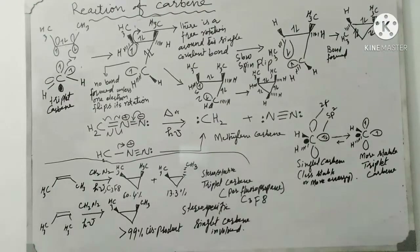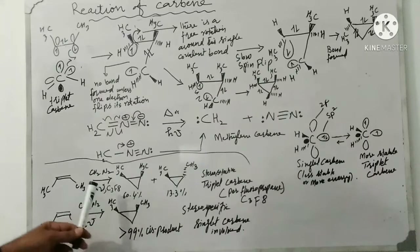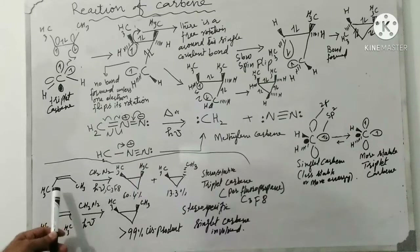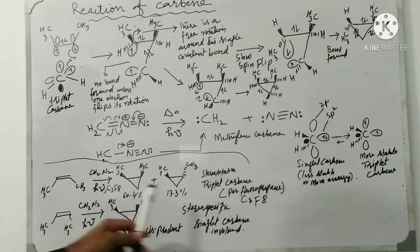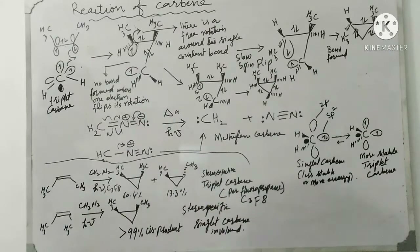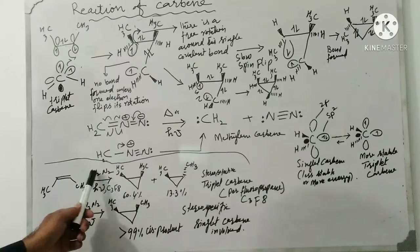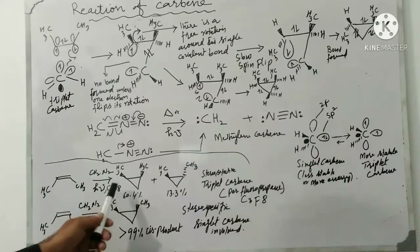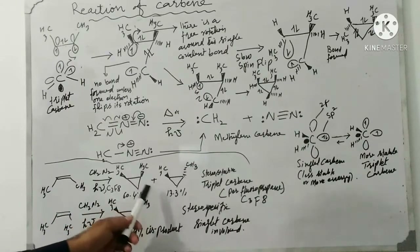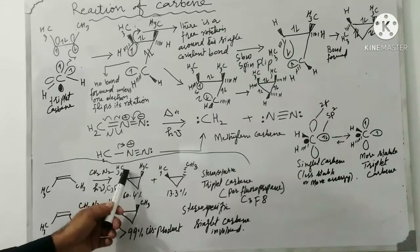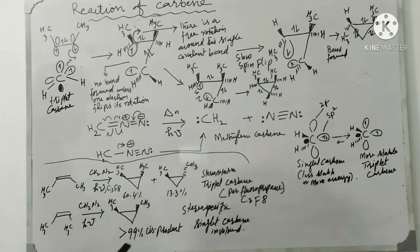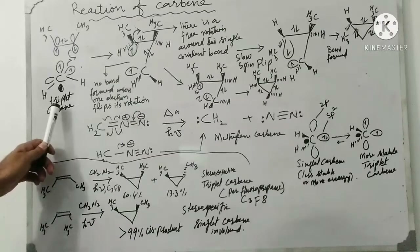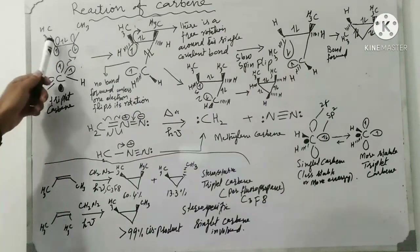Now we discuss the mechanism for triplet carbene. When diazomethane reacts photochemically with cis-2-butene in the presence of perfluoropropane (C3F8) as solvent, the maximum number of collisions cause the triplet carbene to react with cis-2-butene. In that case a mixture of two products is formed — one is the cis-cyclopropane and the other is the trans-cyclopropane.